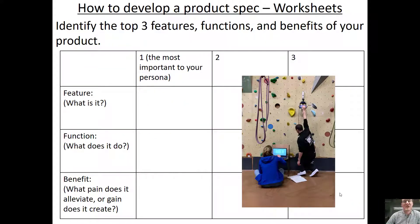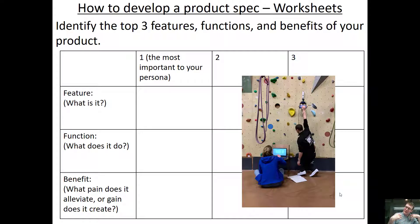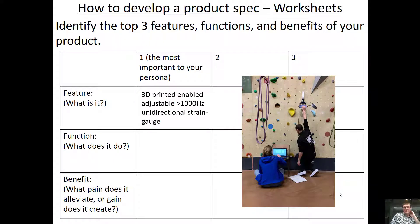To develop the product spec, there are worksheets to help. The first is to identify your top three features, functions, and benefits, really starting with what you think is most important. A feature describes what the product is — it's typically very engineering-related. A function describes what the product does. A benefit describes what pain it alleviates or what gain it creates for the customer. Using the metagrip as an example: its features are that it's 3D printed, which enables easy adjustment, and it measures greater than 1,000 Hz using unidirectional strain gauges.